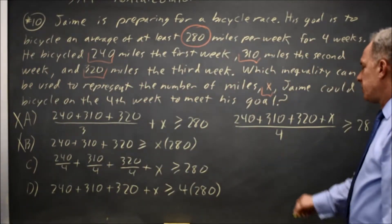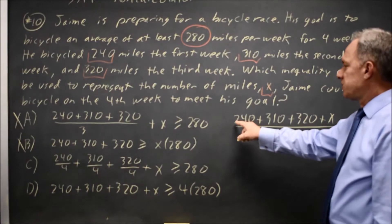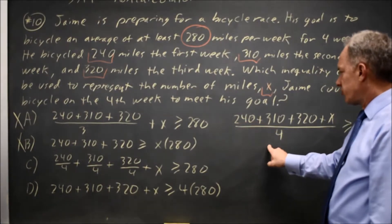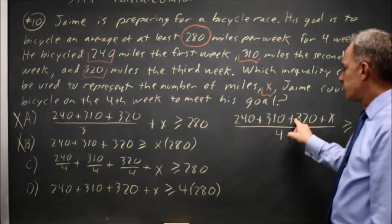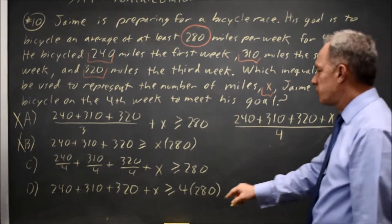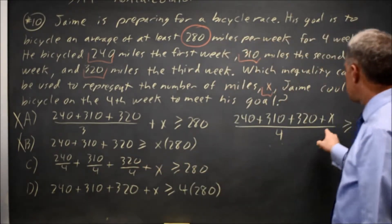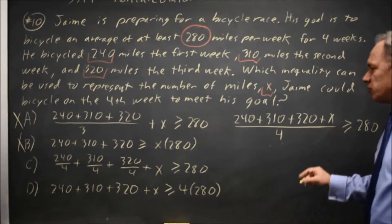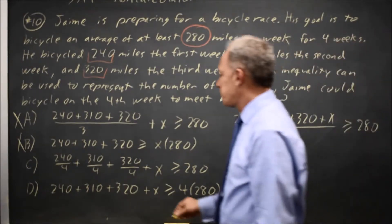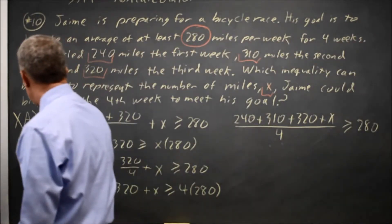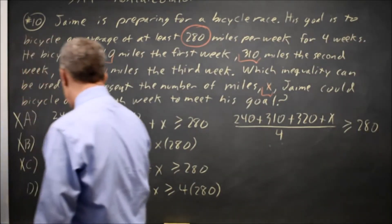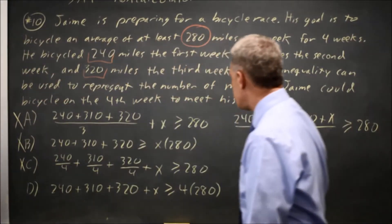If I separate them into four fractions, it's 240 over 4, 310 over 4, 320 over 4 — which they have. But the X should also be over 4, which is not what they have in choice C. So I'm hoping D will be right.